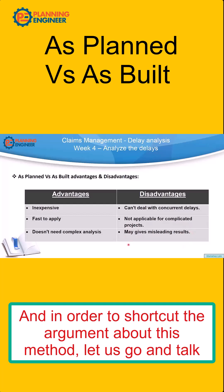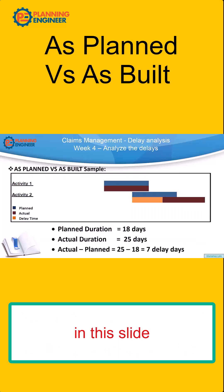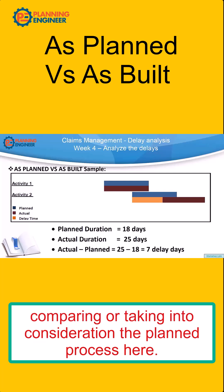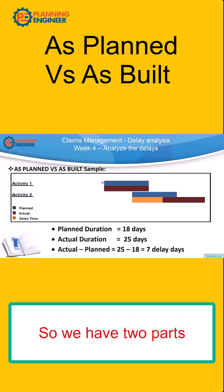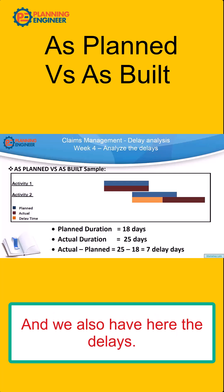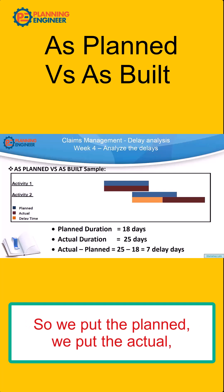To shortcut the argument about this method, let's look at this slide. This method simply gives you a picture of how your project performed, comparing and taking into consideration the planned process. So we have two parts: the planned, which you can see in the blue bar, and the actual. We also have the delays shown here.